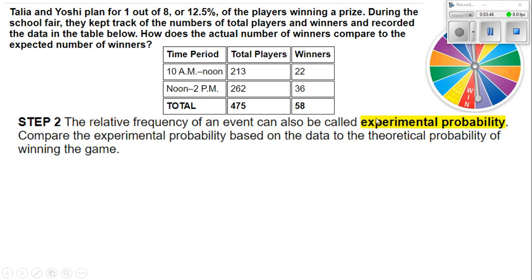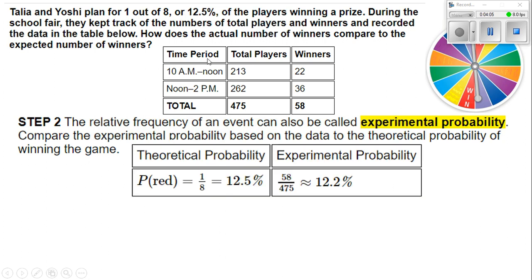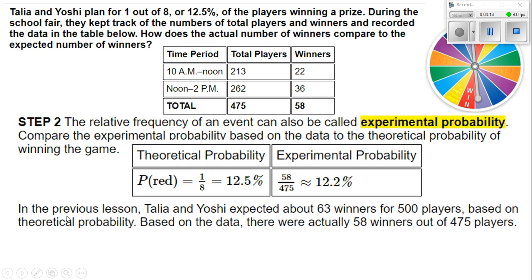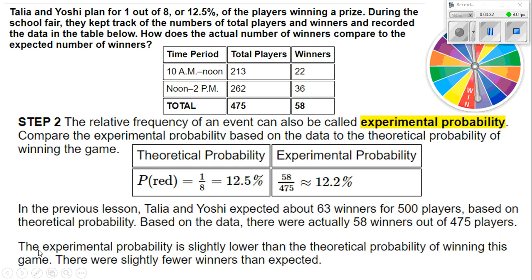Relative frequency of an event can also be called the experimental probability. Compare the experimental probability based on the data to the theoretical probability of winning the game. Experimental probability is what actually happened; theoretical probability is what should happen. The theoretical probability was 12.5%; the experimental probability was 12.2%. Talia and Yoshi expected about 63 winners for 500 players based on theoretical probability, but based on the data there were actually 58 winners out of 475 players. The experimental probability is slightly lower than the theoretical — there were slightly fewer winners than expected.